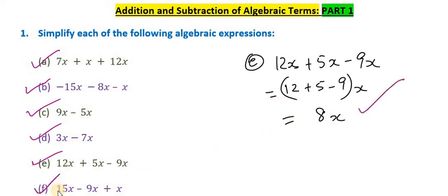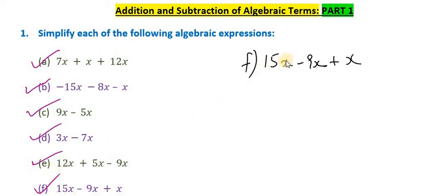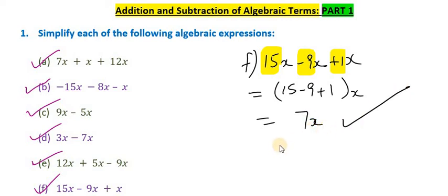And for the last one, that's F. We have 15x minus 9x plus x. Now if you don't see a number before the x, remember there's a 1 there. So we have 15 before x, we have negative 9 before x. We don't see a sign, there's a 1 there. So because we have a plus, it's really a positive 1. And then we're going to factor out the x. So it's 15 minus 9 plus 1. Now 15 minus 9, that's 6. And 6 plus 1, that's 7. So that's 7x. That is our solution.